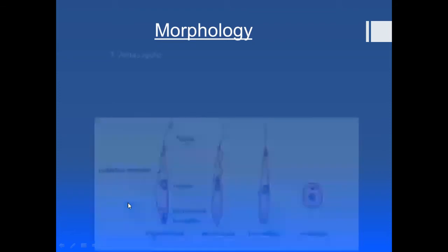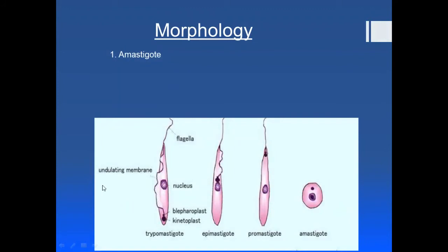The first morphological form is the amastigote form. It is circular or oval in shape, has a central nucleus, and does not have any flagella. It also has a kinetoplast, which is a mass of mitochondrial DNA — this structure is present in each and every form.